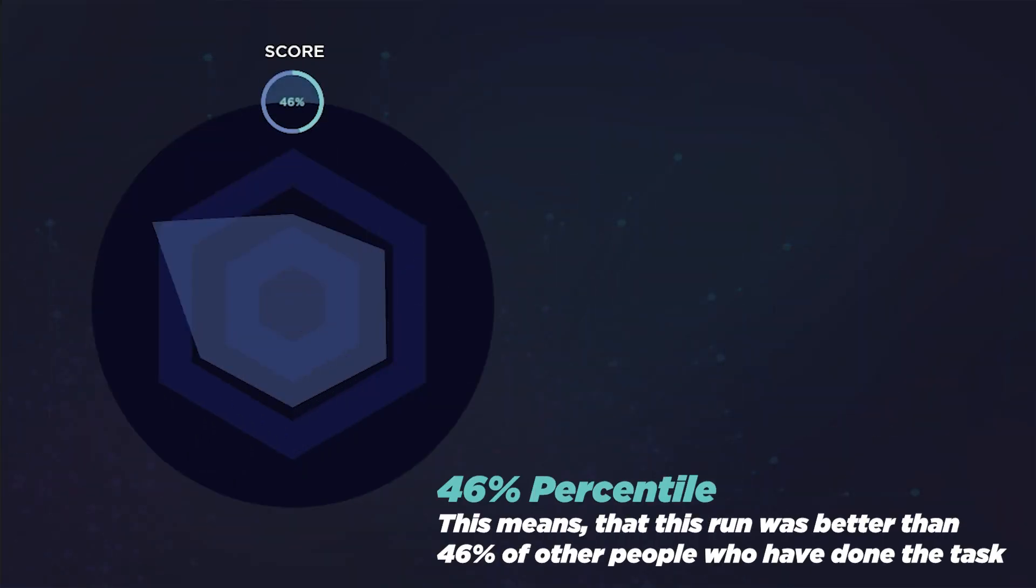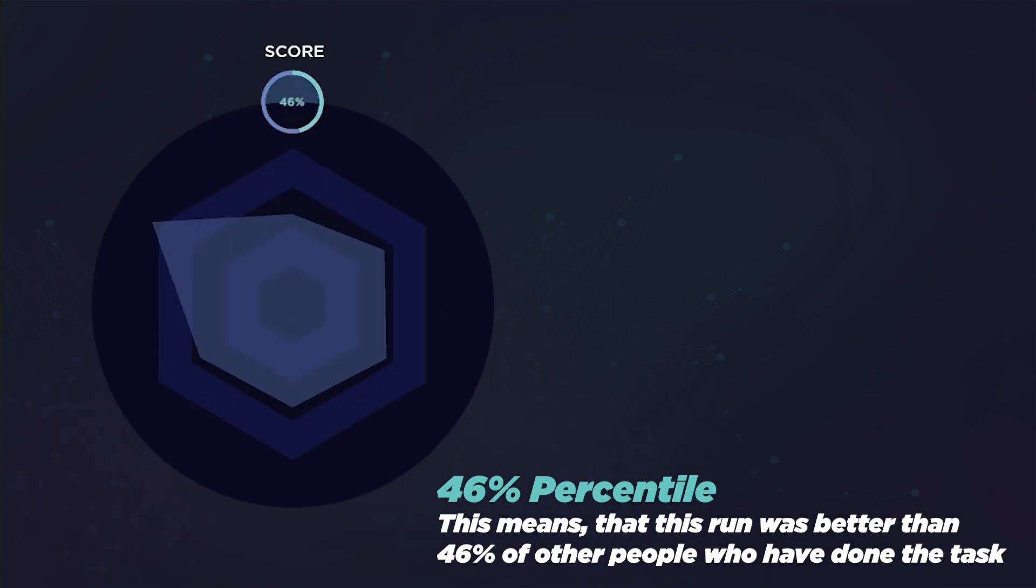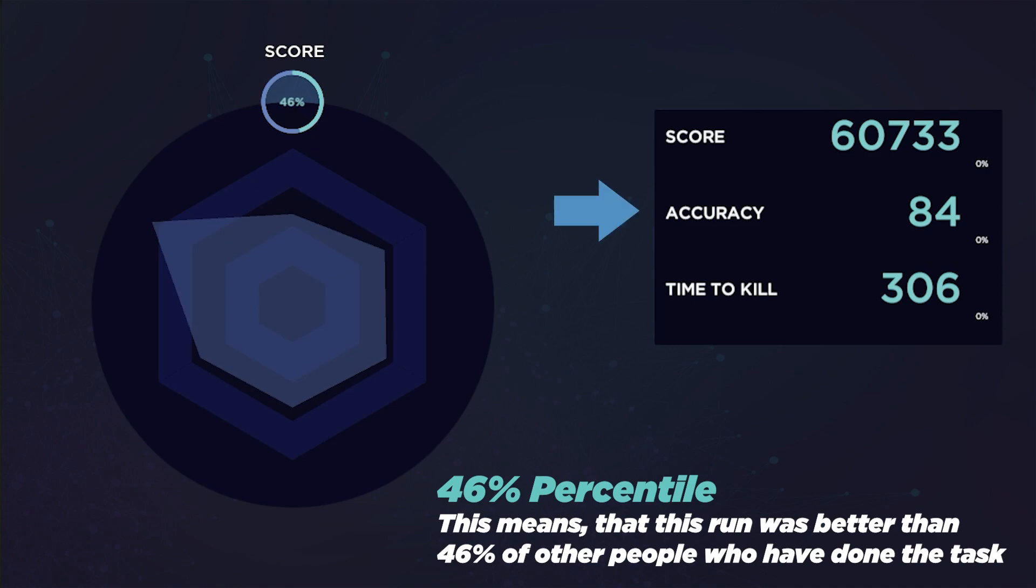Score is your overall points obtained from the run and a quick indicator of how well you did during the task. On the right side of the screen, you can see your score total along with accuracy measured in percentage and time to kill measured in milliseconds.